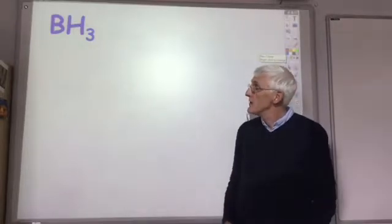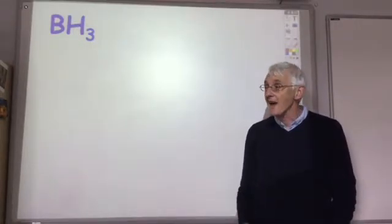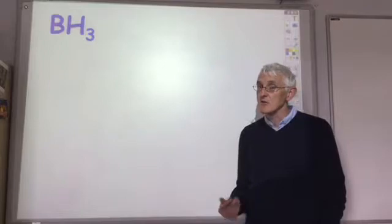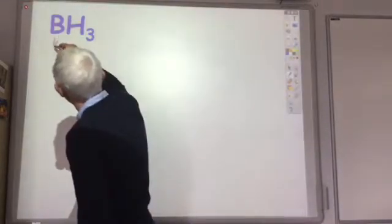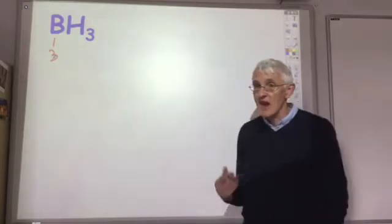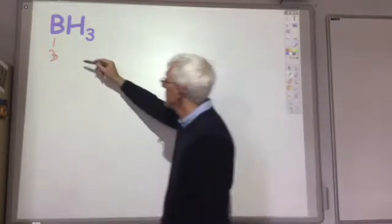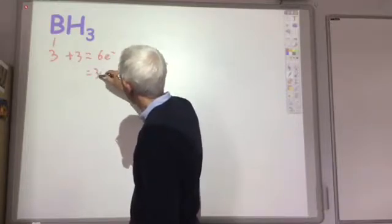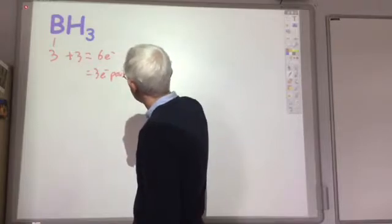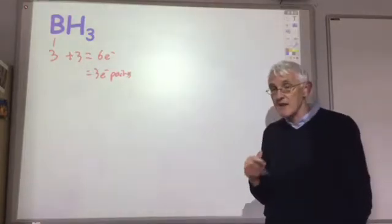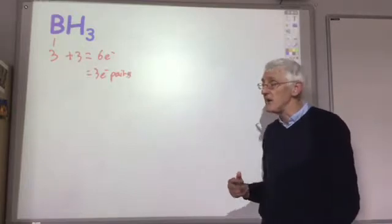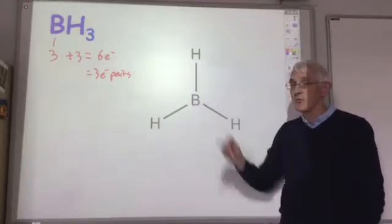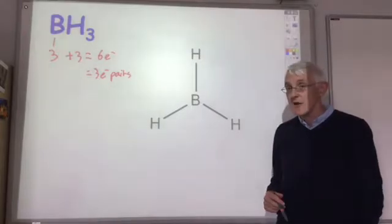Let's do another example. So if we're asked to work out the shape of the boron hydride molecule. Well, we look at the central atom boron. It's in group three. So it's got three outer electrons. And then one electron is donated by each hydrogen atom forming a covalent bond with it, which gives us another three. So it gives us six electrons, which gives us three electron pairs. We would expect the electron arrangement around the boron atom to be trigonal planar.